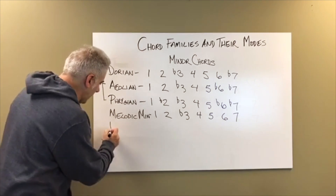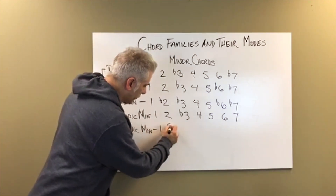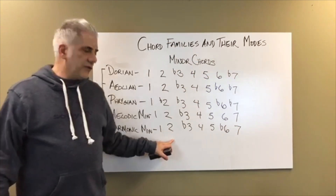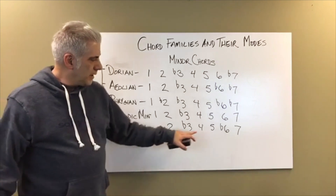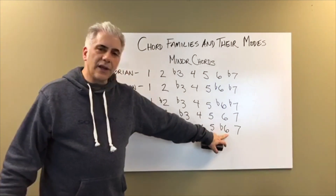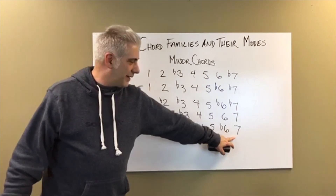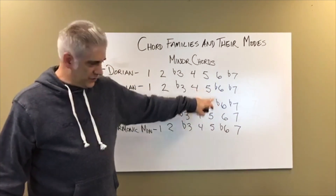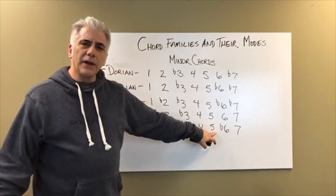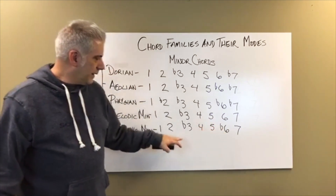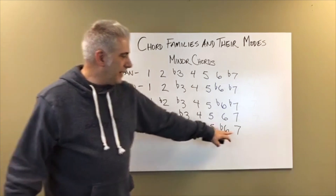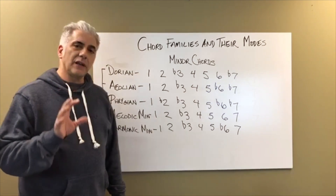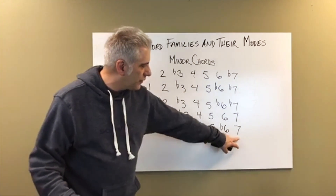The next one is harmonic minor: 1, 2, flat 3, 4, 5, flat 6, major 7. Between the flat 6 and the major 7 you have the augmented second — that's the characteristic sound of the harmonic minor. You've got the half step similar to Aeolian that gives you that pull. There are three points where you have half steps: the sixth pulls to the fifth, the flat third pulls to the second, and the seventh pulls back to the tonic. That augmented second between those two tones is very, very important.